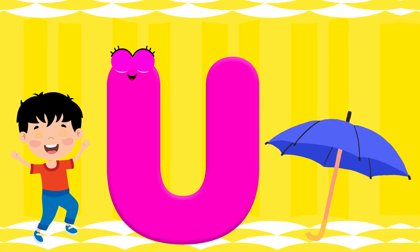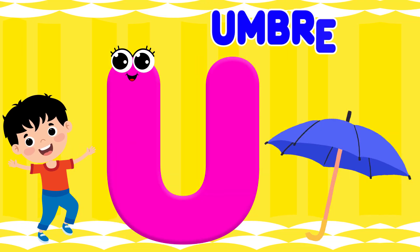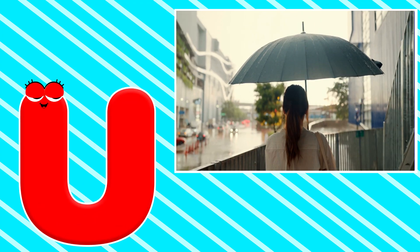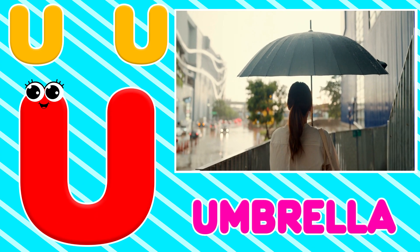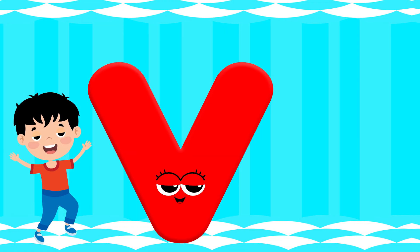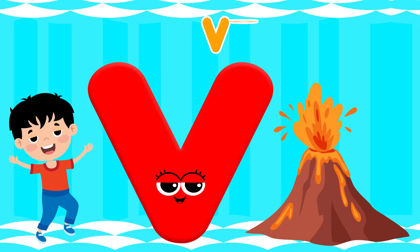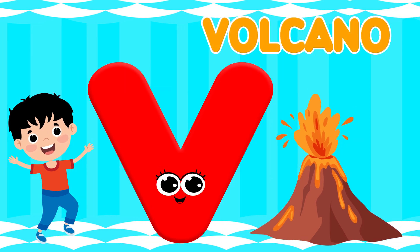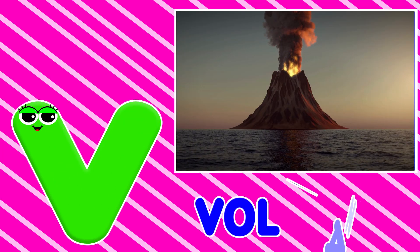U is for Umbrella. Umbrella. U is for Umbrella. V is for Volcano. V is for Volcano.